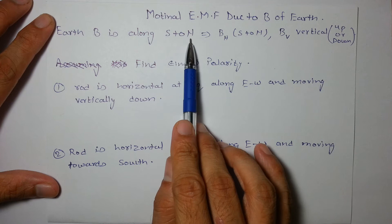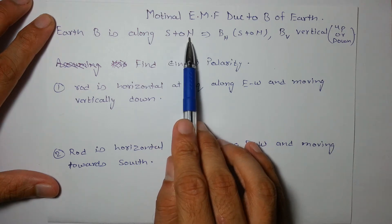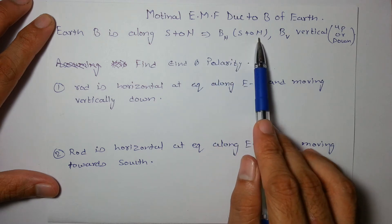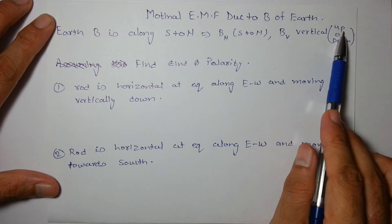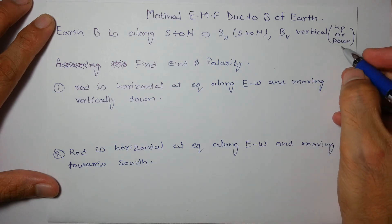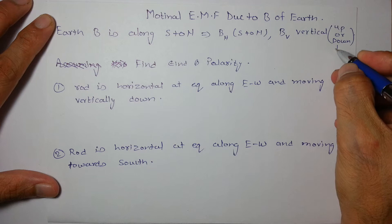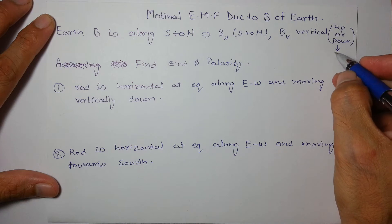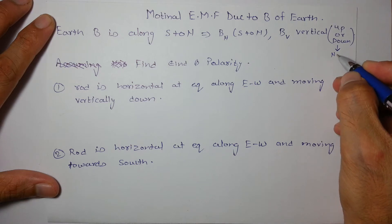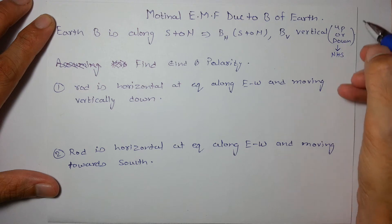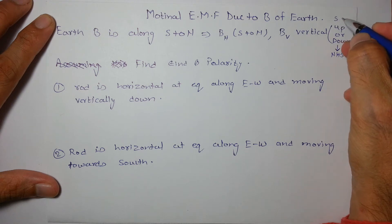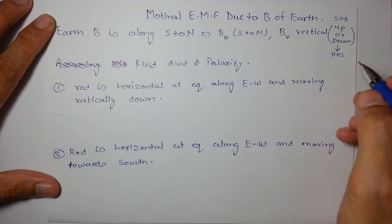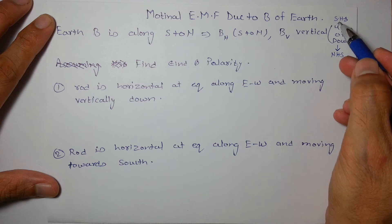The direction of Earth's magnetic field is along south to north — from the south pole of Earth to the north pole of Earth. BH, the horizontal component, is from south to north, and the vertical component BV will be either up or down depending on which hemisphere you are in. In the northern hemisphere, BV is downward, and in the southern hemisphere, BV is upward.